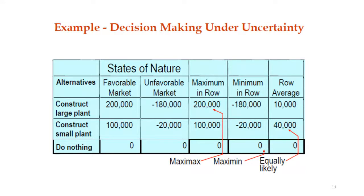For maximin, we find the minimum value per row. The minimum for the large plant row is minus 180,000. The minimum for the small plant row is minus 20,000. The minimum for do nothing is zero. The maximum of these minimums is zero — because minus 180,000 and minus 20,000 are both negative — so do nothing is selected under maximin.